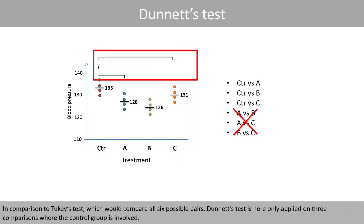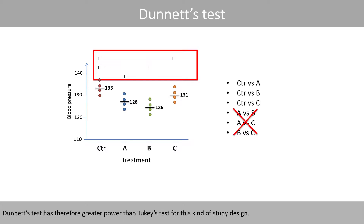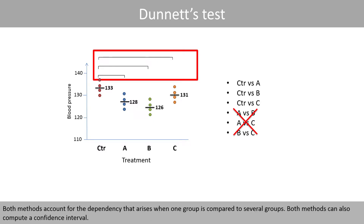In comparison to Tukey's test, which would compare all six possible pairs, Dunnett's test is applied only on the three comparisons where the control group is involved. Dunnett's test therefore has greater power than Tukey's test for this kind of study design. Both methods account for the dependency that arises when one group is compared to several groups, and both methods can also compute a confidence interval.